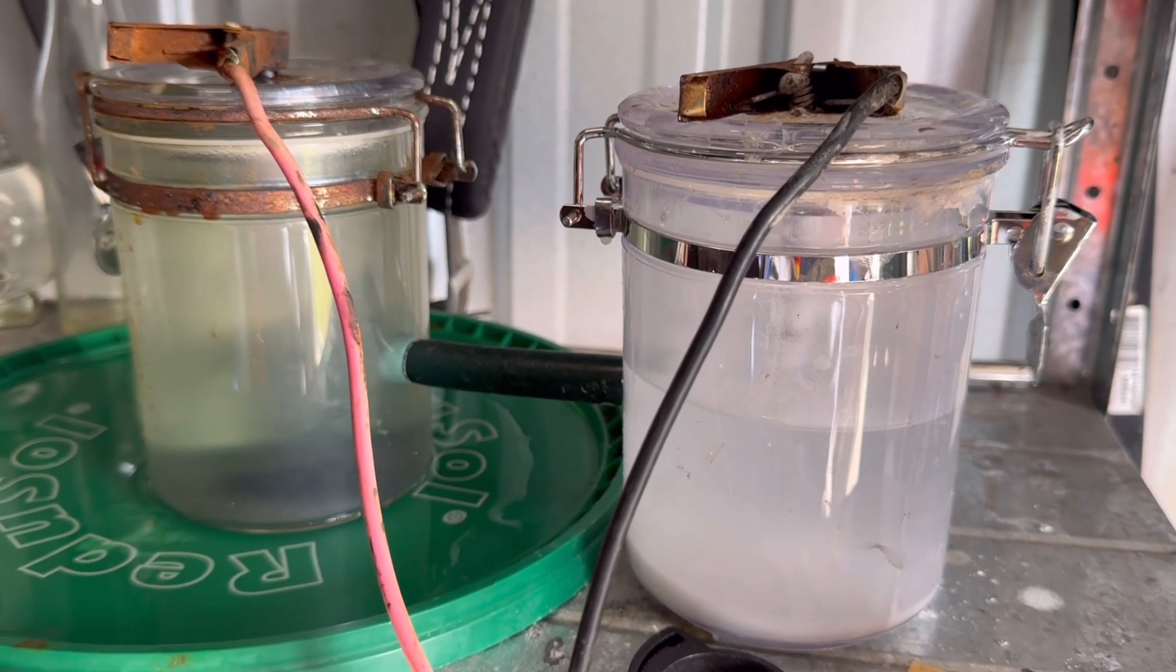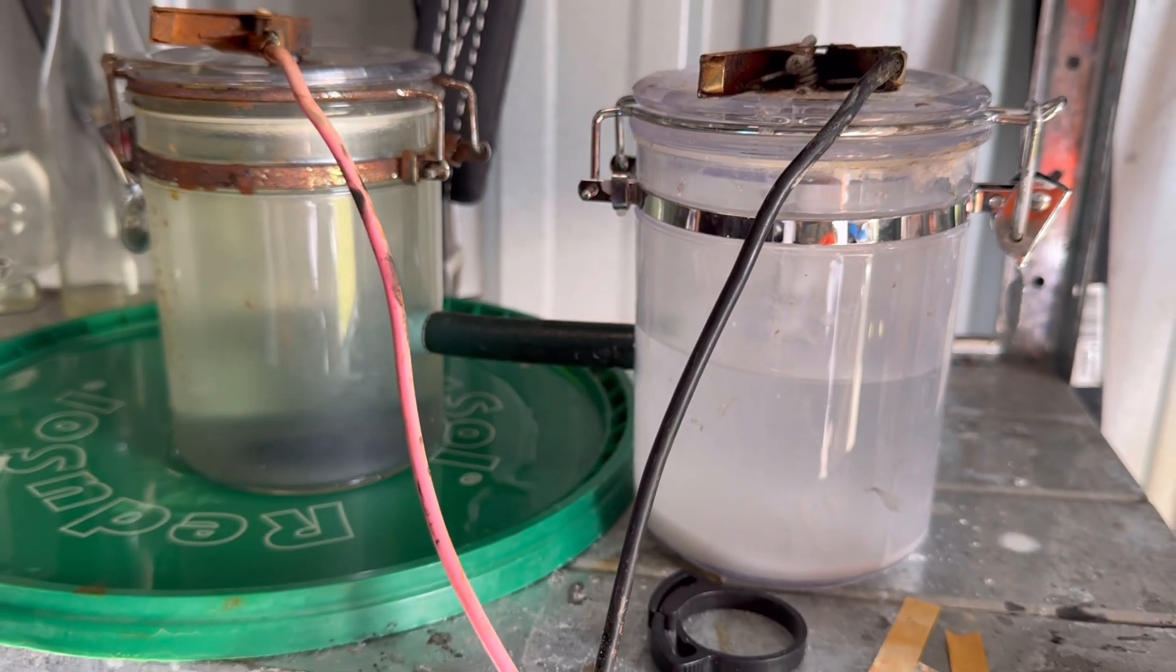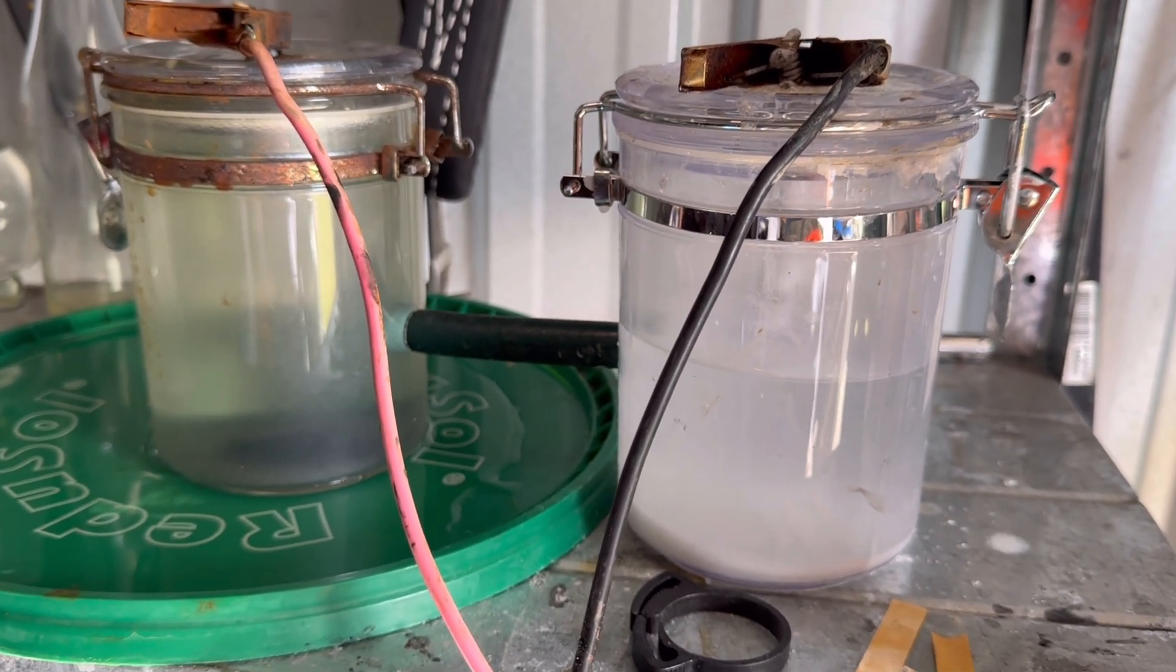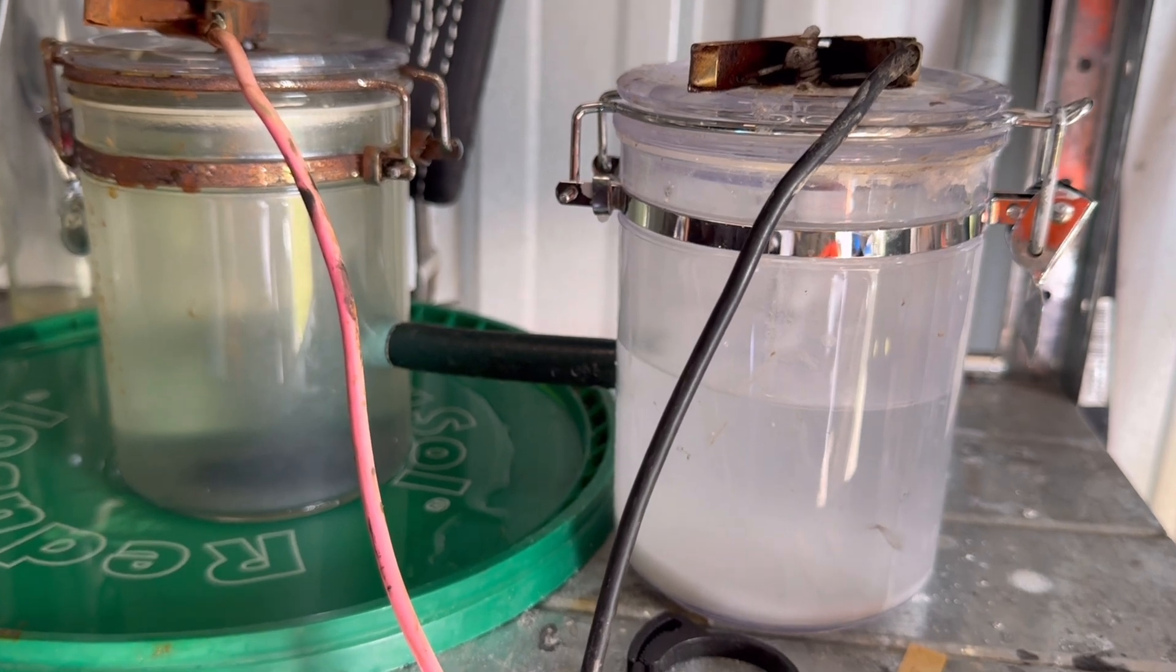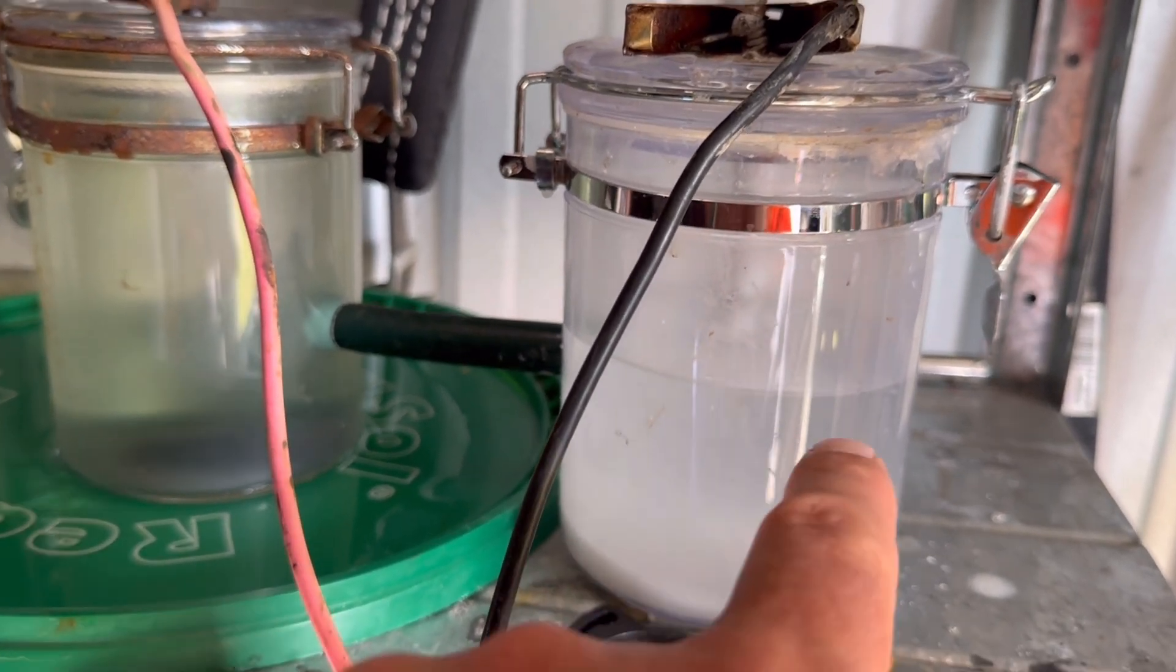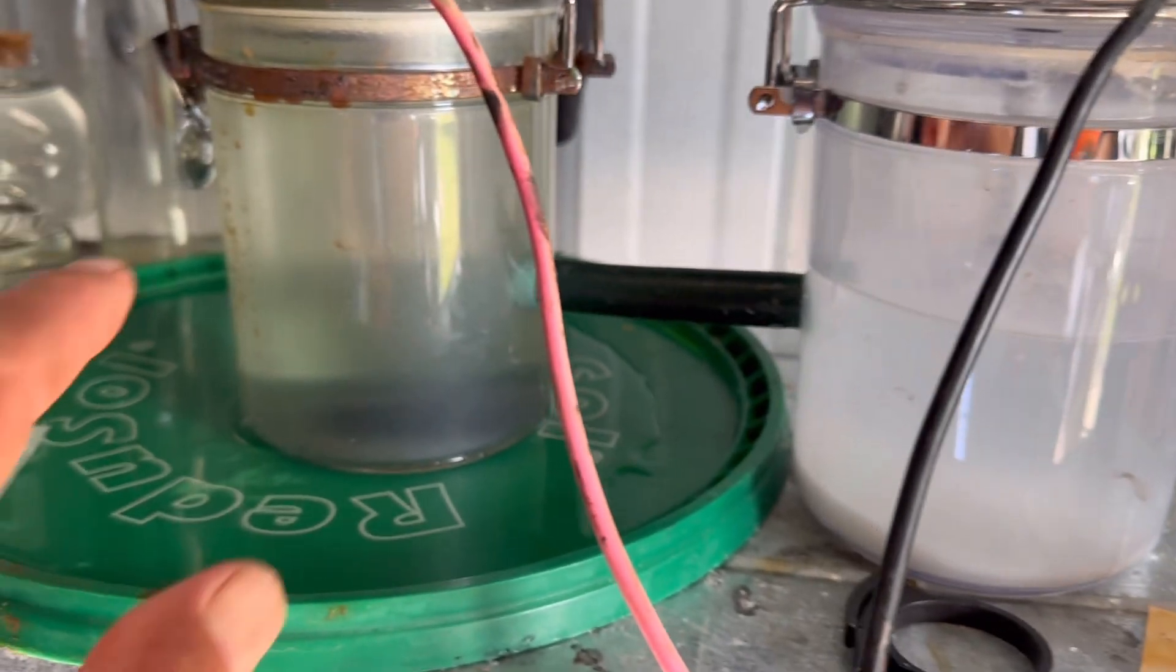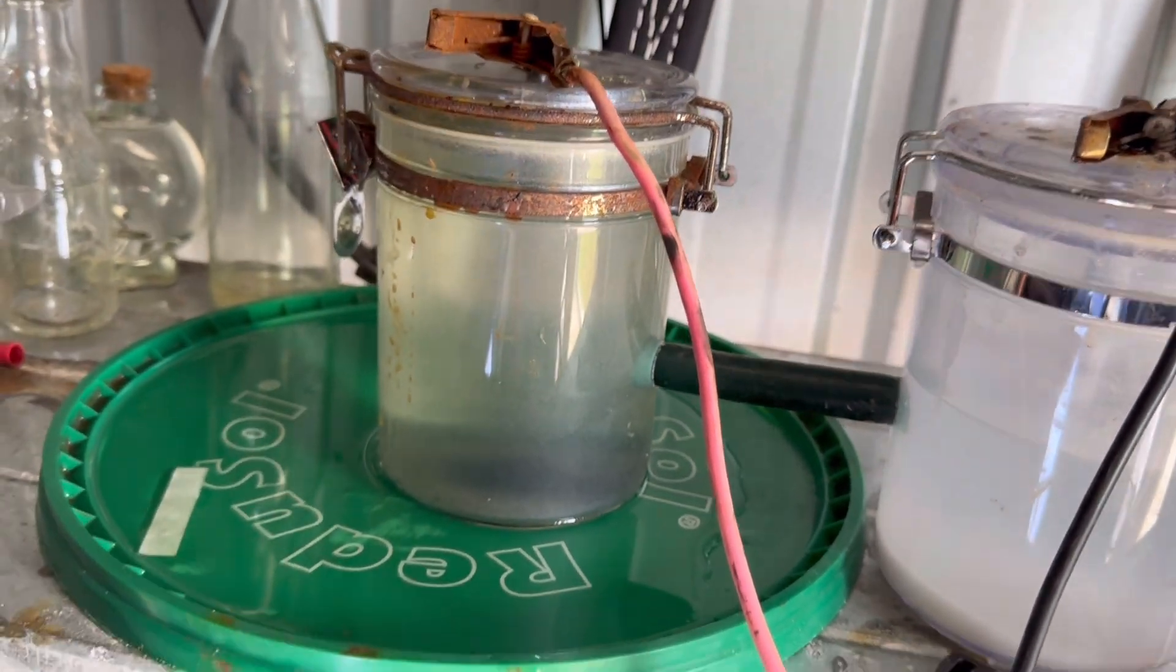So what can you actually do with this setup? You can make sodium hydroxide for soap or degreasing. You can collect chlorine-rich water to sanitize jars or make homemade bleach. And now I know I can use this system as a slow fluid mover, a chemical timer even.